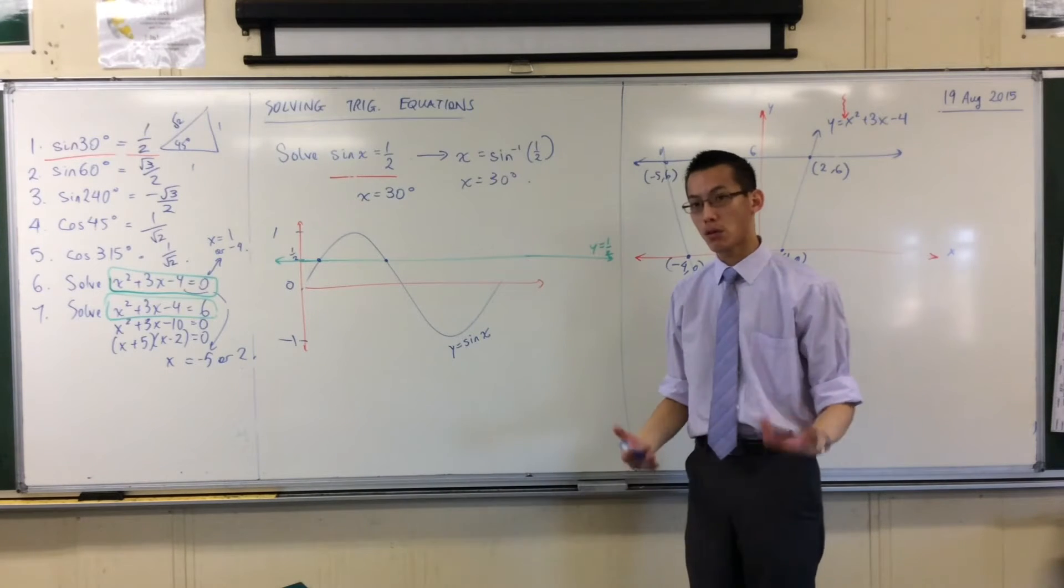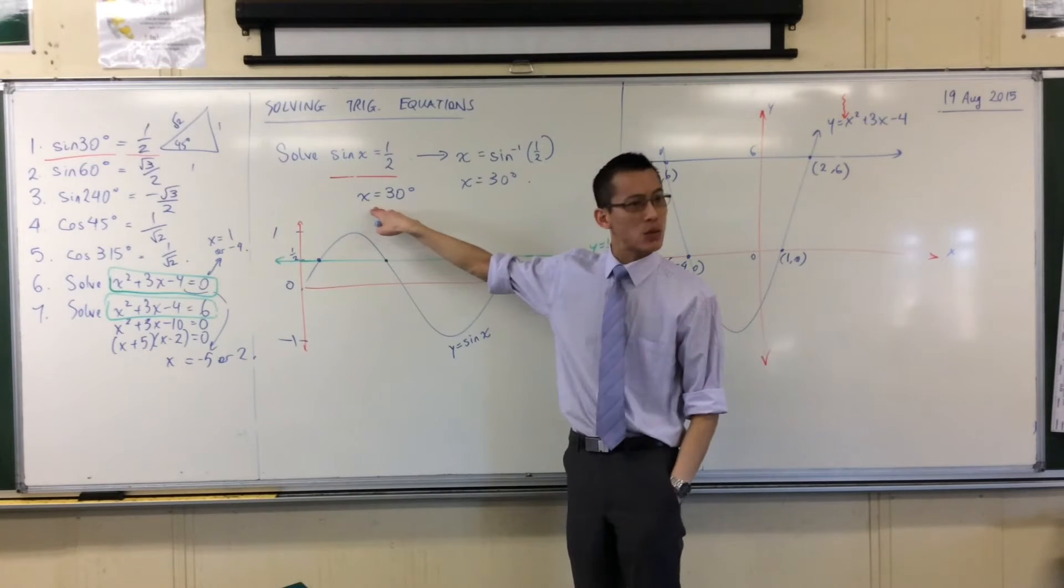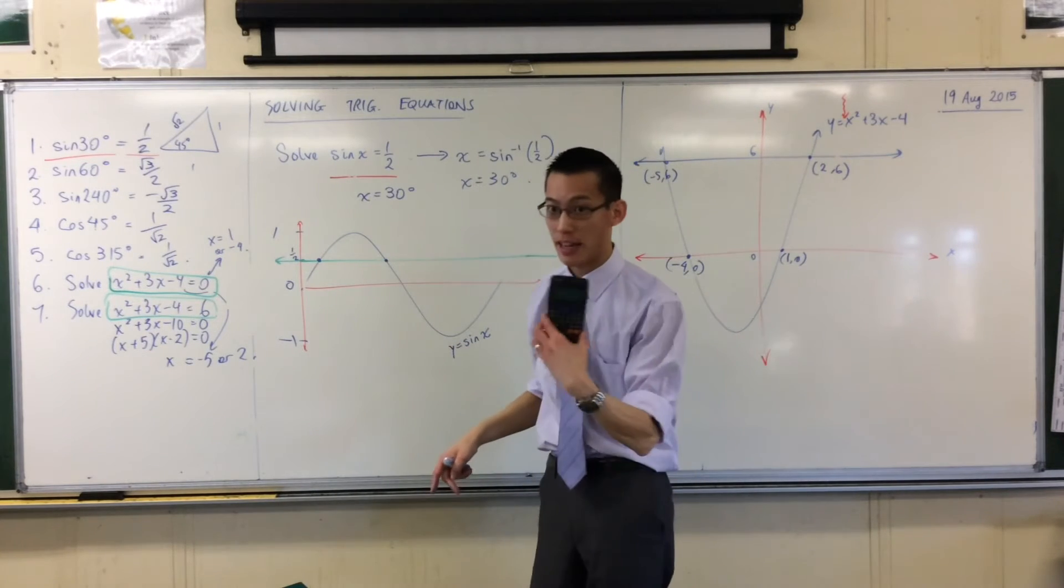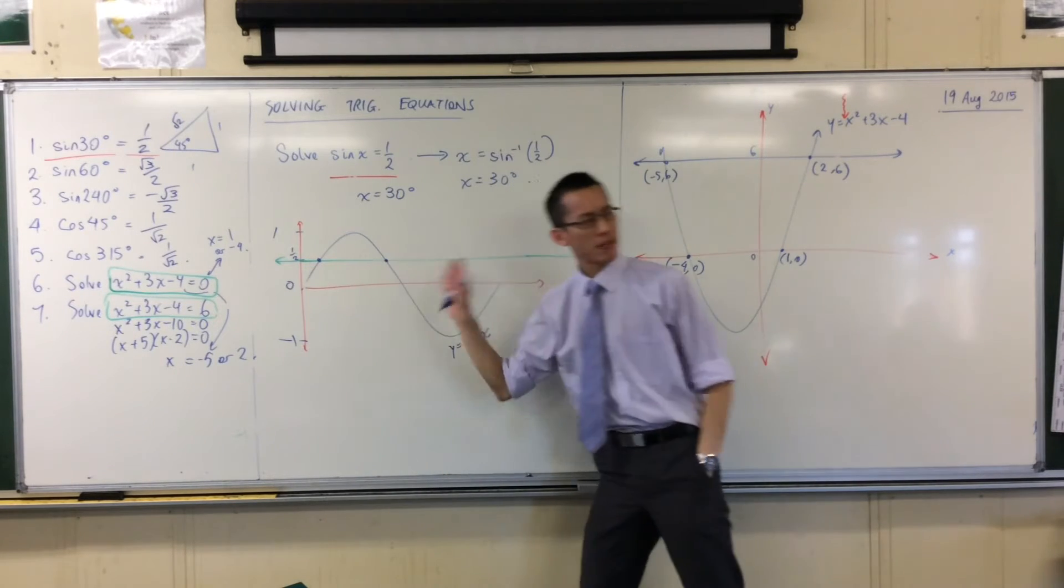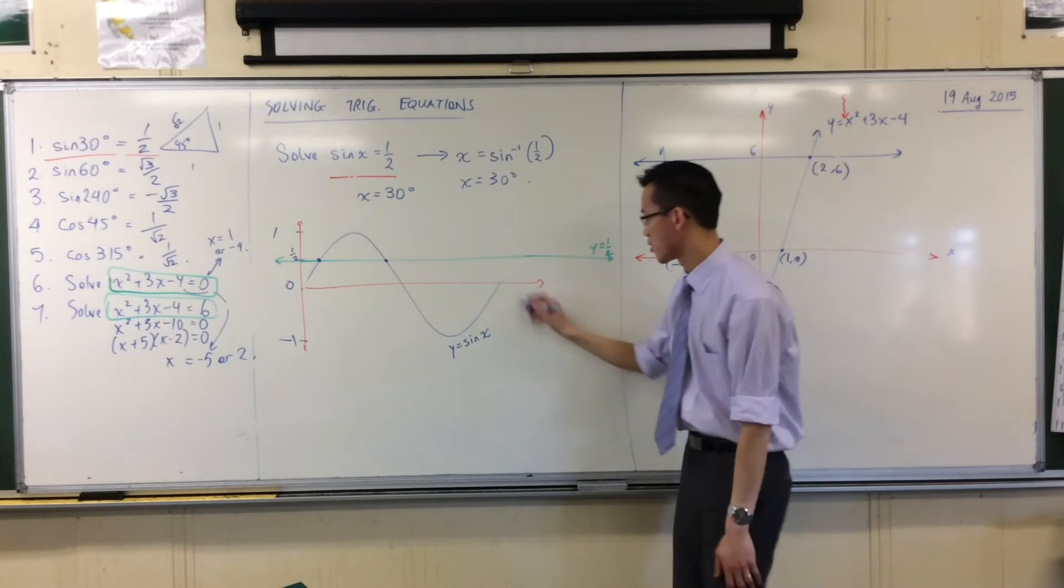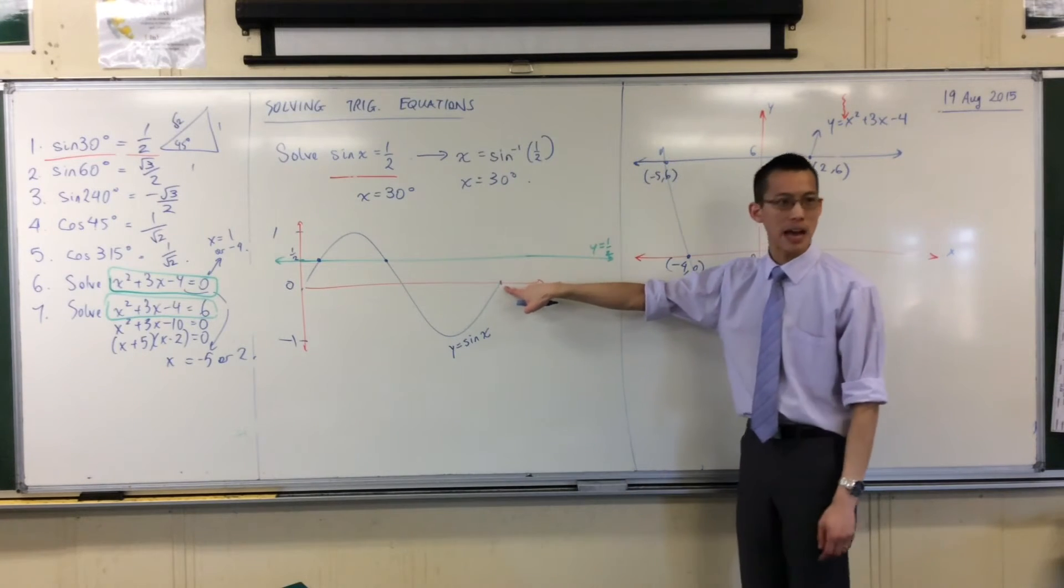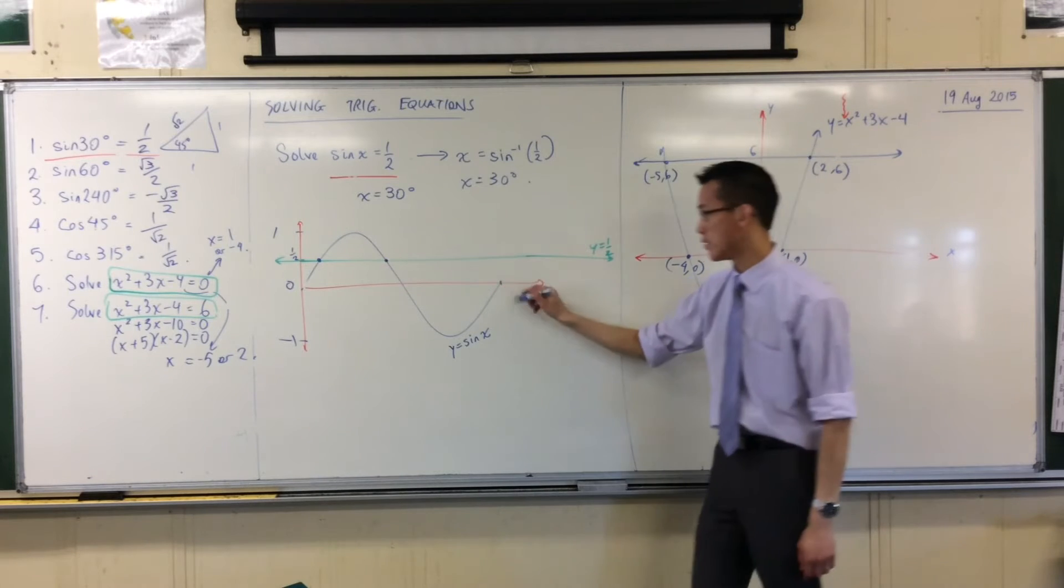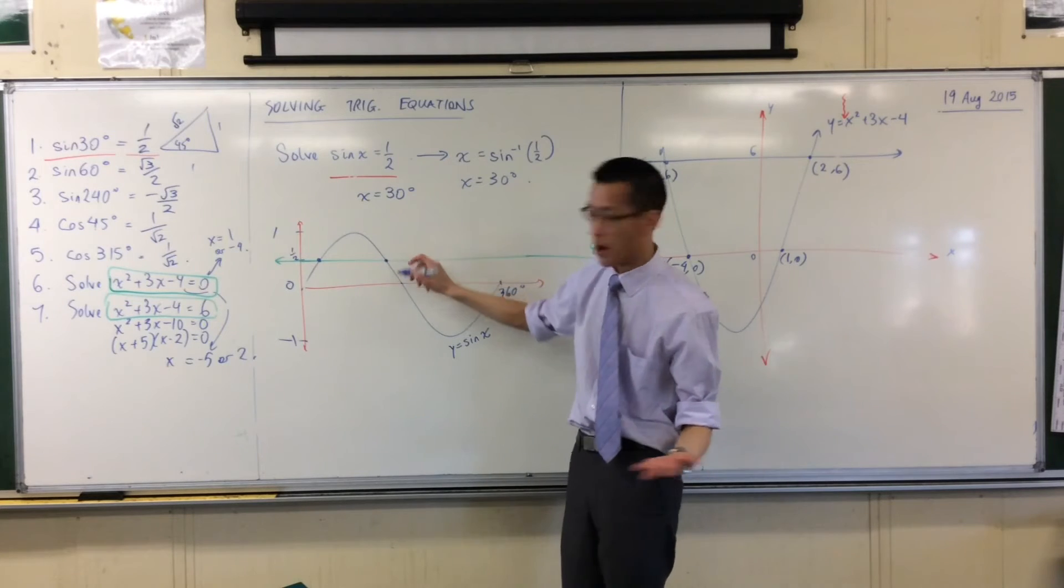Now, if you've drawn your graph reasonably accurately, remember we expected x equals 30 would be an answer, and your calculator told you x equals 30 should be an answer. Remember this sine graph is periodic. It repeats. So at this point, I've come back to the beginning. How far? What's the size of my angle at this point? 360. Very good. So if that's 360, then halfway, this point here should be? 180.